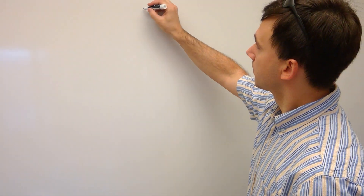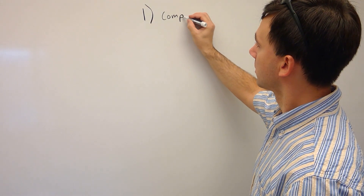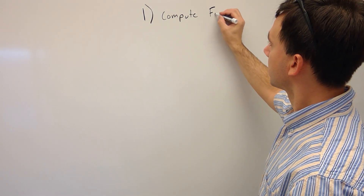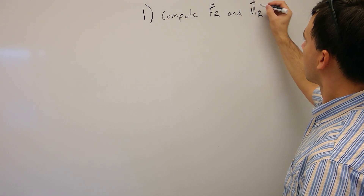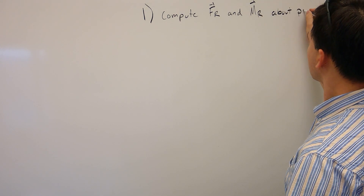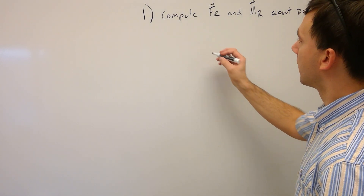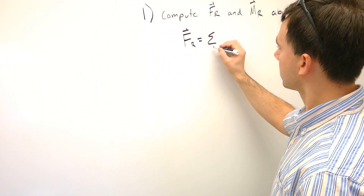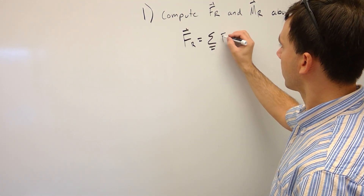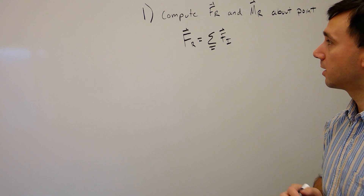The purpose of this video is to walk you through the steps so that you are able to do the reduction of a force to a resultant force and a wrench. The first step is to compute both the resultant force and a resultant moment about a point. The resultant force is just the sum of all the individual forces applied to the system.